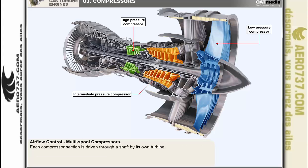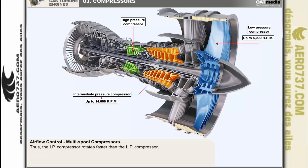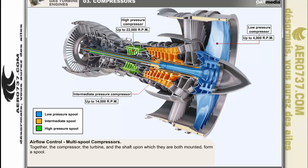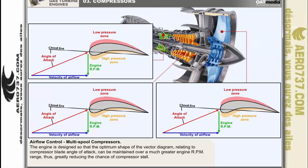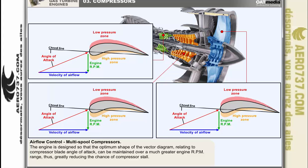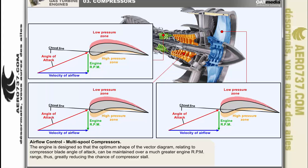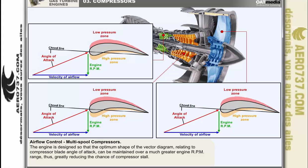At any given power setting, the speed of rotation of the compressors increases in proportion to their pressure status — the IP compressor rotates faster than the LP compressor, and the HP compressor rotates faster than the IP compressor. Together, the compressor, turbine, and shaft form a spool. By designing the engine so that the speed of the low pressure spool falls off more rapidly than the intermediate and high pressure spools upon closing the throttle, the optimum shape of the vector diagram relating to compressor blade angle of attack can be maintained over a much greater RPM range, greatly reducing the chance of compressor stall.